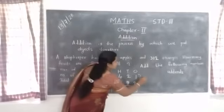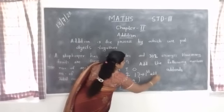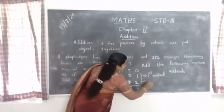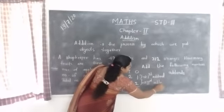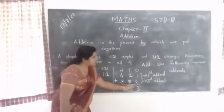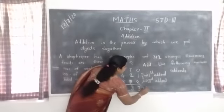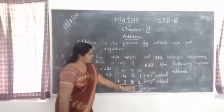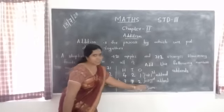The first number is the first addend. The second number is the second addend. These two are addends and the result is called the sum.